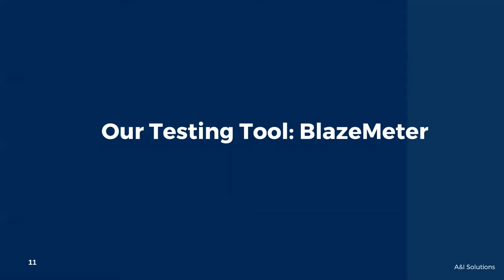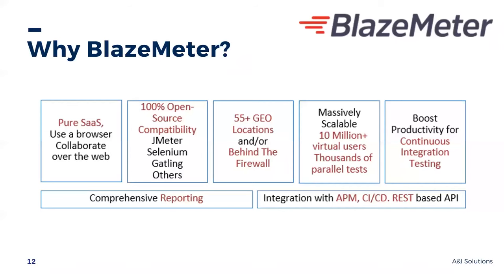Now let's take a second to talk about the testing tool we're going to use, which is BlazeMeter. It's pure SaaS — you only need a browser and can calibrate over the web. It's 100% open source and works with all the most common languages. You can drive massive load from more than 55 geolocations. It's massively scalable — over 10 million concurrent users in your test. It integrates with your continuous delivery, has comprehensive reporting, and if you connect BlazeMeter to your APM solution, you get KPIs from both for a beginning-to-end solution.